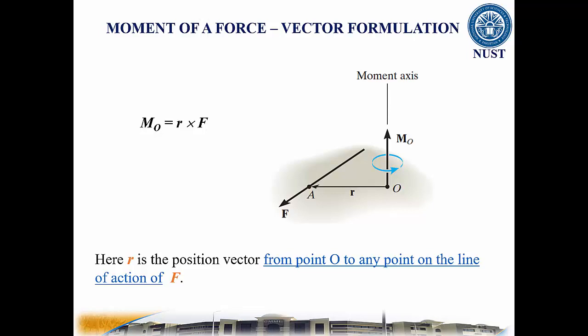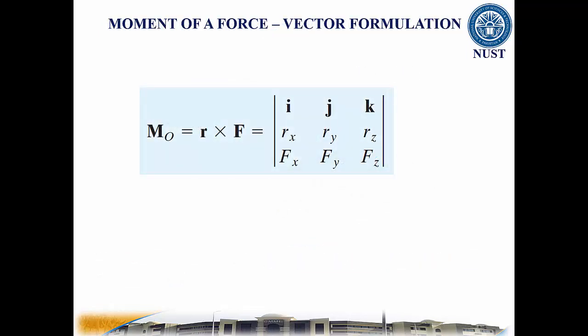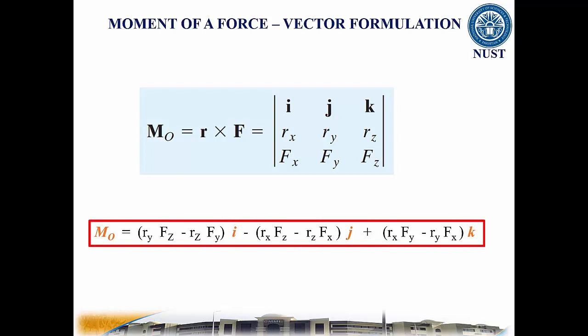So, using the cross product, a moment can be expressed in the form of this equation. By expanding the above equation using two by two determinants, we get the moment equation about point O.